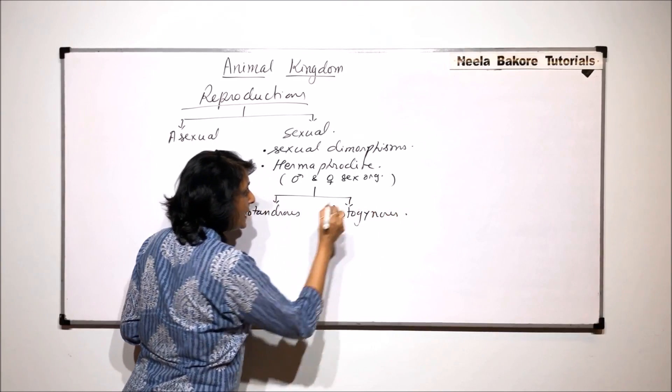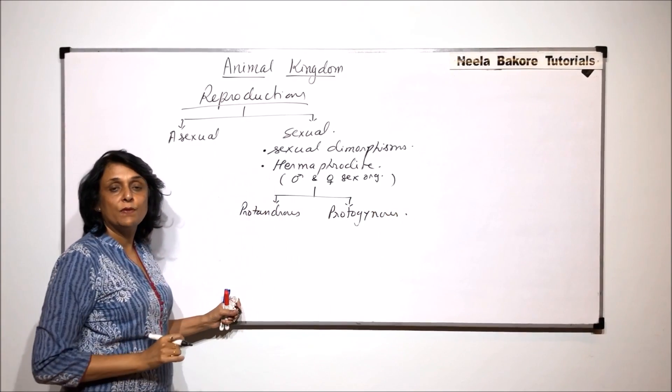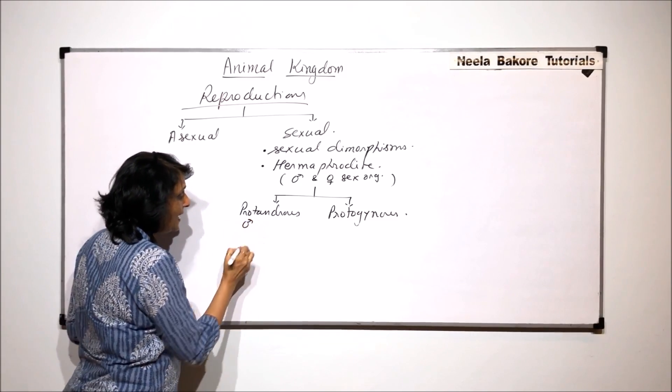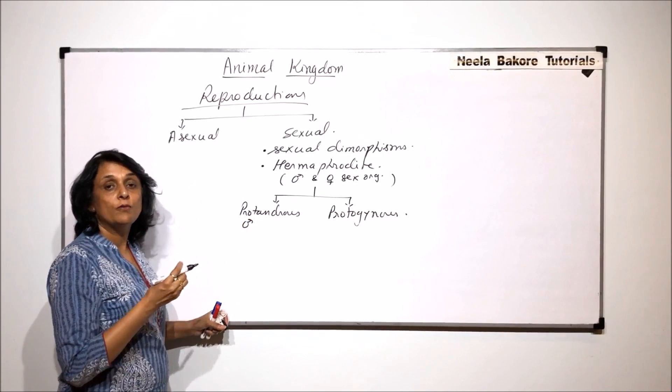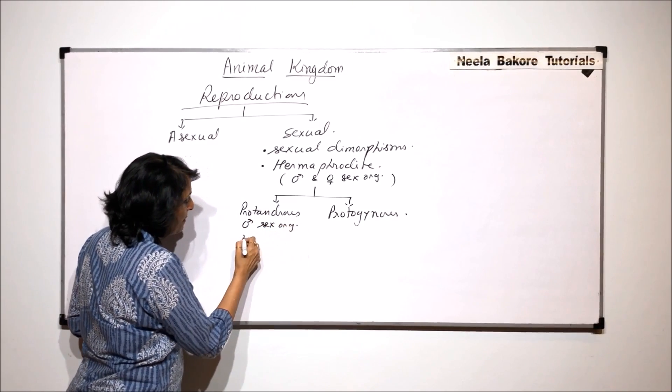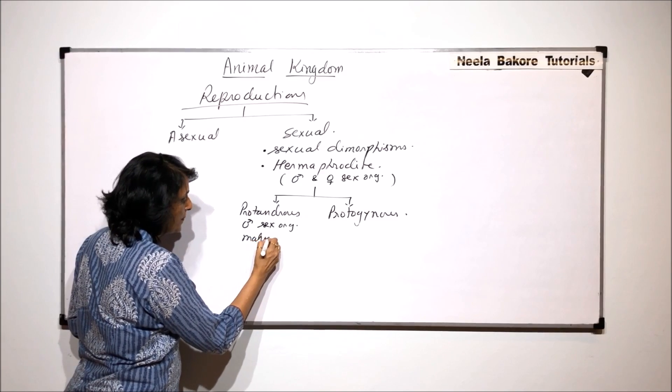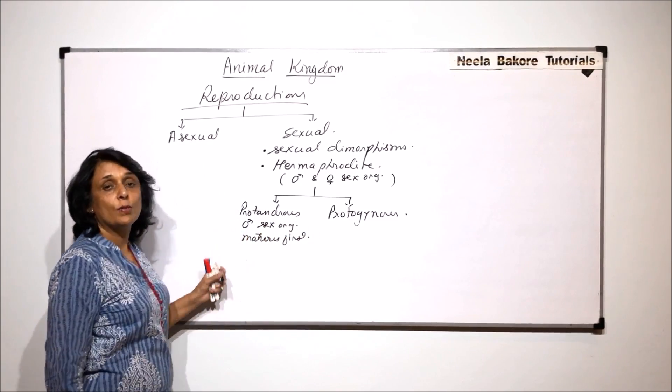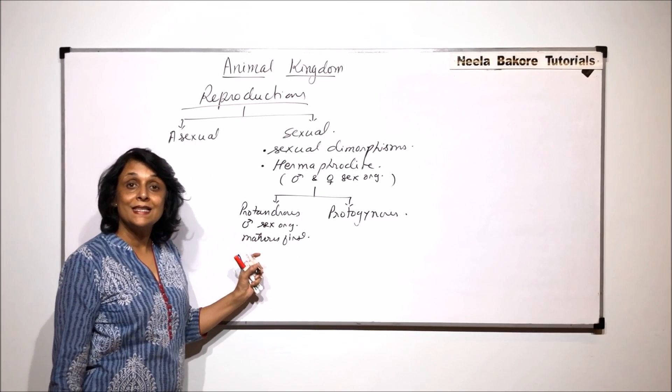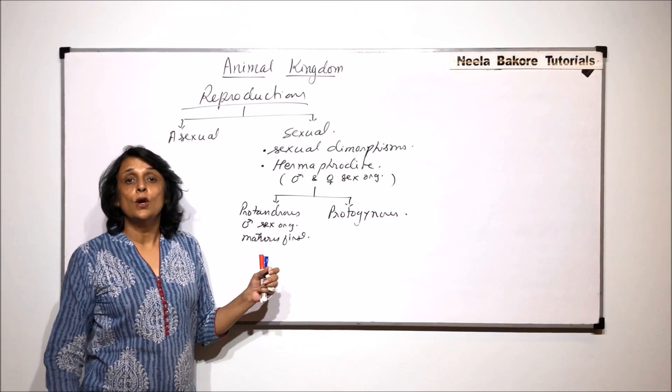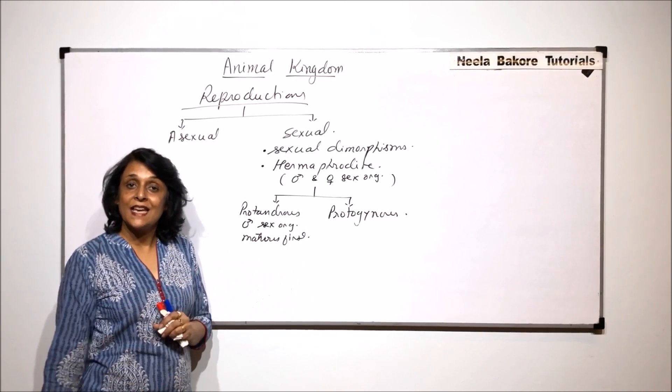That means animals, hermaphrodite, male and female sex organs are present in the same animal. But the male gamete is formed first or male sex organ matures first. So that when the spores or the male gametes are formed in the same animals, the eggs are not ready. So there is no chance of self fertilization.